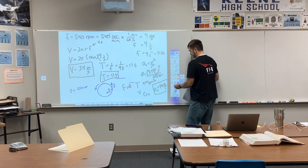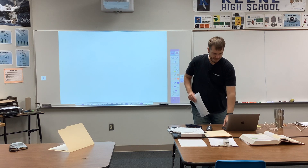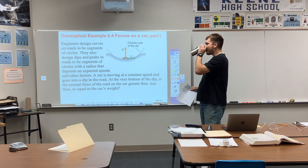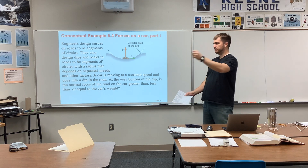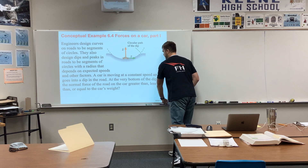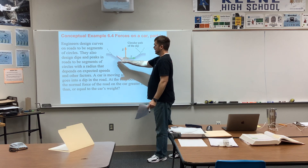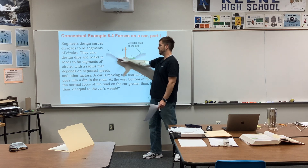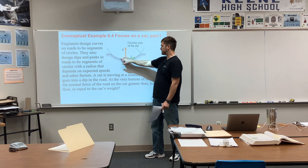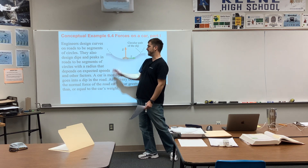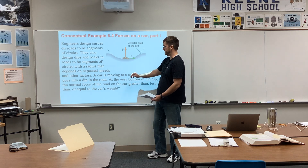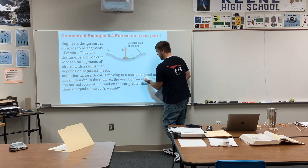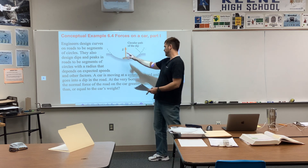This next one is a conceptual problem. I want to show what it looks like when a circle is oriented vertically, because the next problem deals with something moving horizontally — I want both situations covered. Engineers design curves on roads to be segments of circles, and also design dips and peaks to be circular segments with a radius depending on expected speeds and other factors. A car is moving at constant speed.